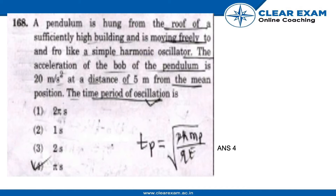The next question is: a pendulum is hung from the roof of a sufficiently high building and is moving freely to and fro like a simple harmonic oscillator. The acceleration of the bob of the pendulum is 20 meters per second squared at a distance of 5 meters from the mean position. The time period of oscillation is: 2π s, 1 s, 2 s, or π s.